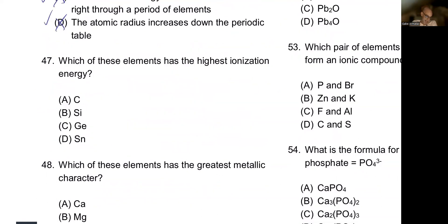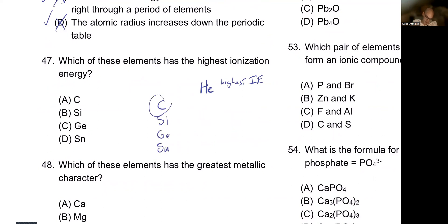Which of these elements has the highest ionization energy? Helium has the highest ionization energy, and the closest element to helium wins. The choices — carbon, silicon, germanium, and tin — are all in the same group. Carbon is highest on the list and closest to helium, so carbon has the highest ionization energy.